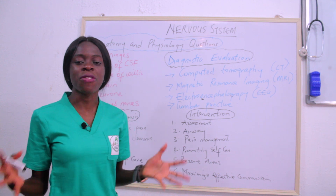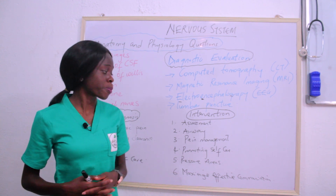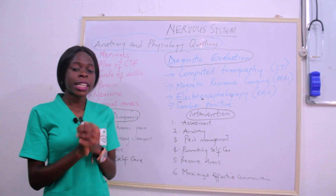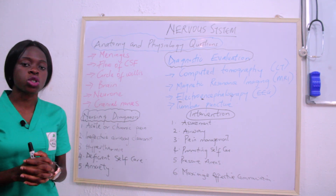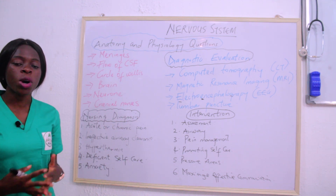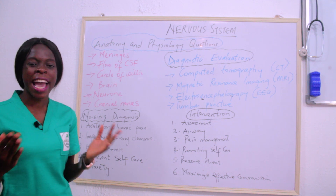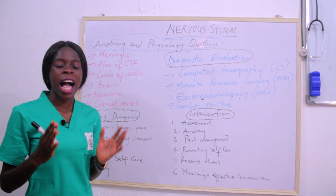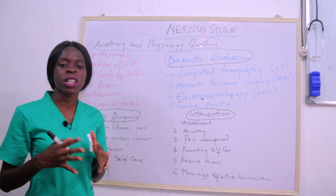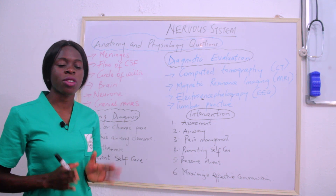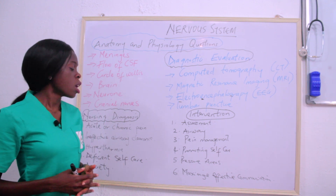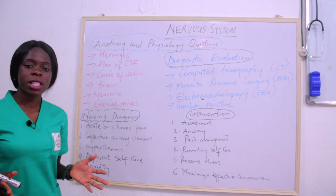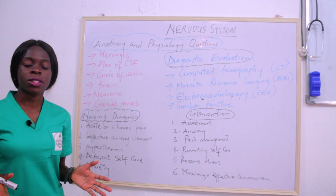Another common diagnostic evaluation is lumbar puncture. These diagnostic tools — computed tomography, MRI, EEG, and lumbar puncture — are common and popular among disease conditions relating to the nervous system.